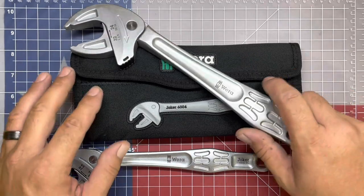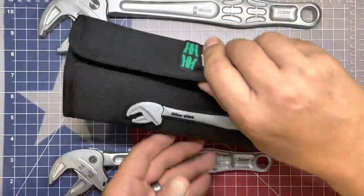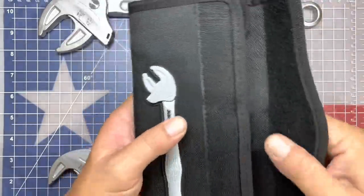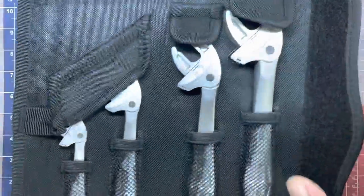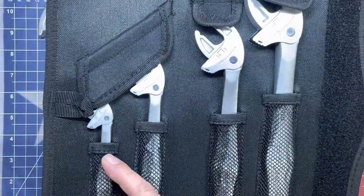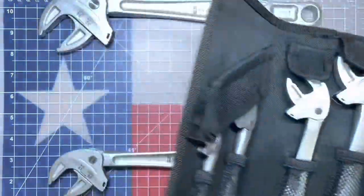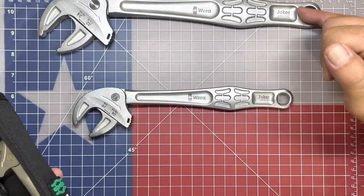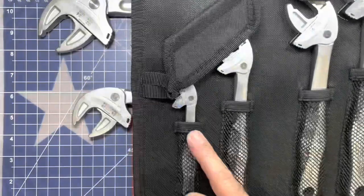These are the Wera Joker 6004 series, the self-adjusting spanner wrenches from Wera. And these particular wrenches come in a four-piece set with a very nice soft case cover, full velcro lip here. And they range from their extra small to their large version. And then these I had to purchase separately. This is the XL and this is the XXL.